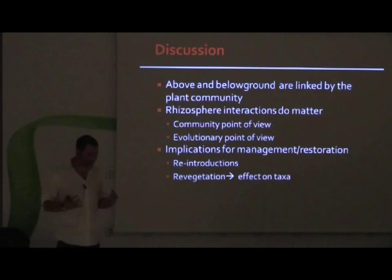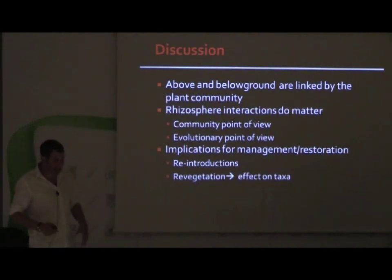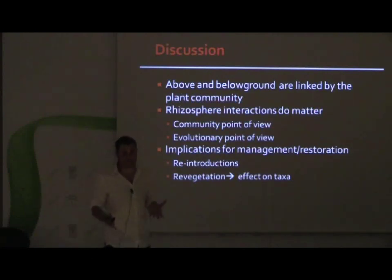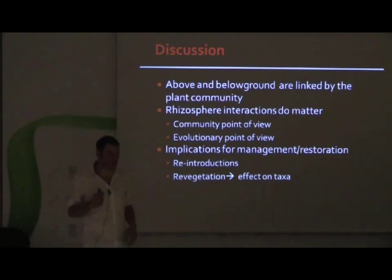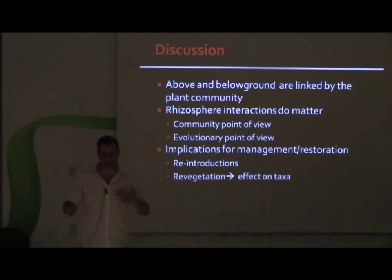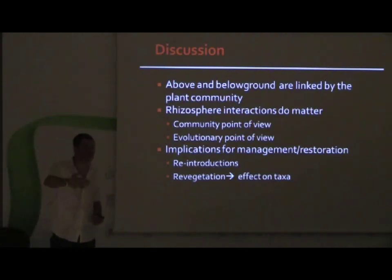Going back to the questions I posed at the beginning: the above and below-ground communities are actually linked by the plant, as we saw in this dune system, and these interactions indeed matter from a community and evolutionary point of view. For this system, the practical importance is that revegetation of coastal dunes occurs quite often. Depending on the type of vegetation you introduce, you might have effects not only on the above-ground community but also below ground, and you have to take into account these effects when you introduce plant populations into a system, because it might affect how the system develops later on.